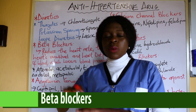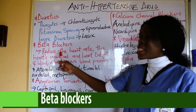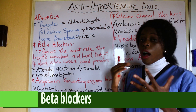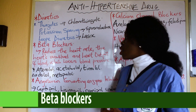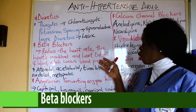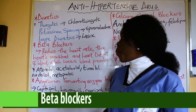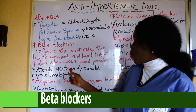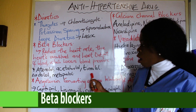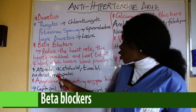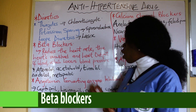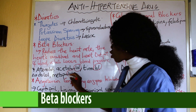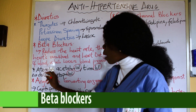Whenever you hear beta blockers, their main mechanism of action is that they reduce the heart rate, the heart workload, and the heart output of blood, which lowers the blood pressure. Examples are atenolol, acebutolol, timolol, nadolol, and metoprolol. If you notice, they all end with '-lol' — that is how to remember your beta blockers.